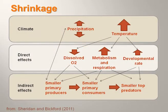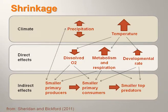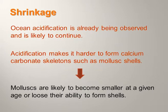Shrinkage is already being observed in a lot of organisms because development, growth, and organism size are affected by temperature and water availability. This diagram shows a working hypothesis of the major processes of climate change effects on organism size, with direct and indirect effects occurring as a result of increasing temperature and variable precipitation. Shelled mollusks have an additional problem: because of ocean acidification, they're likely to become smaller at a given age or lose their ability to form shells.